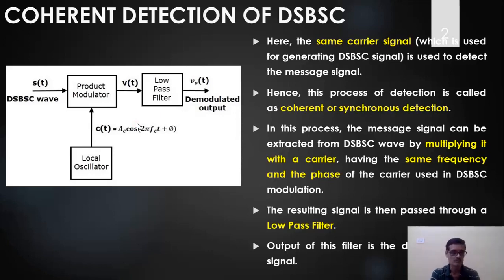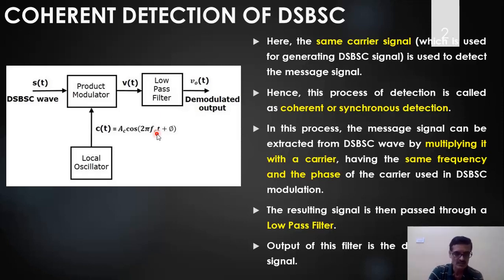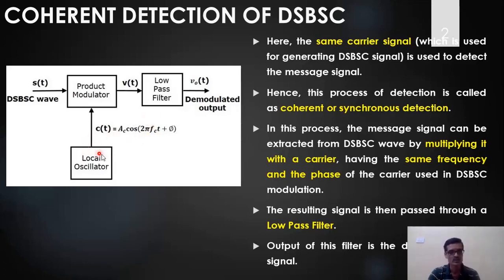In the transmitter side, let us assume that we have used a carrier which has a frequency equal to fc. That means the same carrier signal is regenerated in the receiver by using a local oscillator.